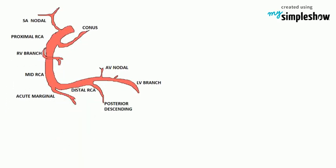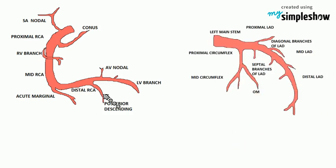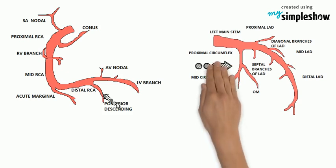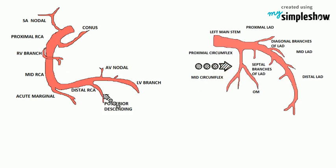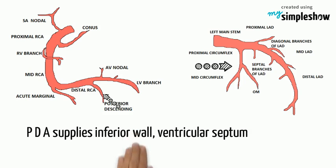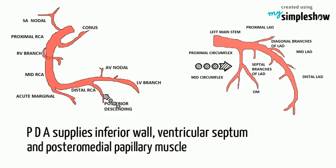In 80% of patients the RCA gives off the posterior descending artery (PDA). In the other 20% of cases, the PDA is given off by the left circumflex artery, or is supplied by both the right coronary artery and the left circumflex. The PDA supplies the inferior wall, ventricular septum, and the posterior medial papillary muscle.